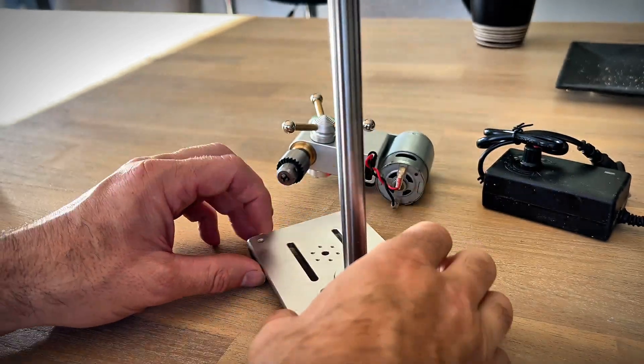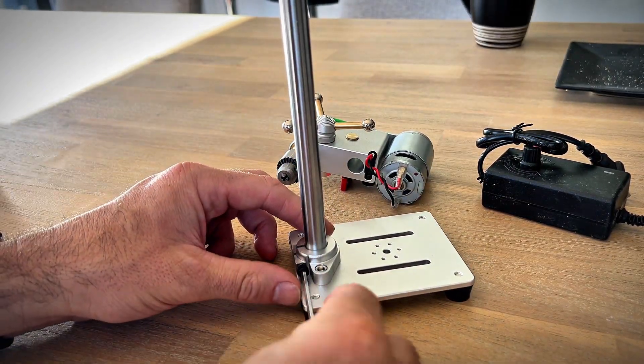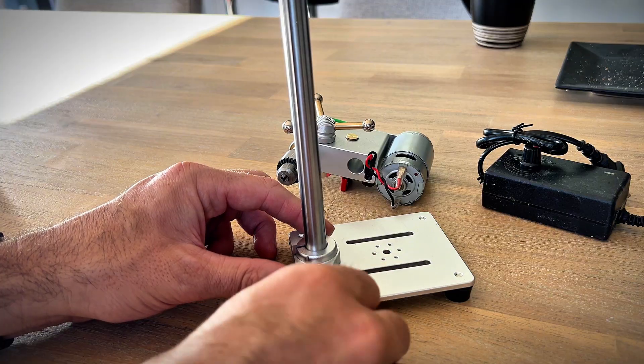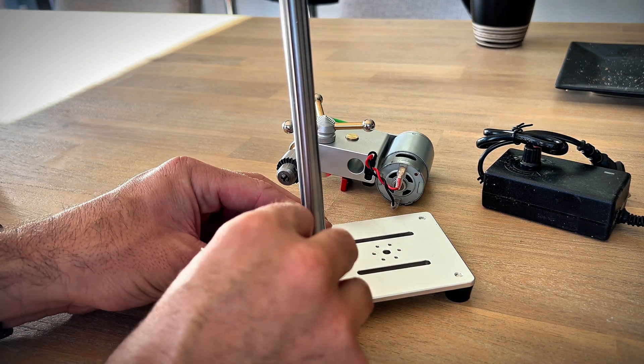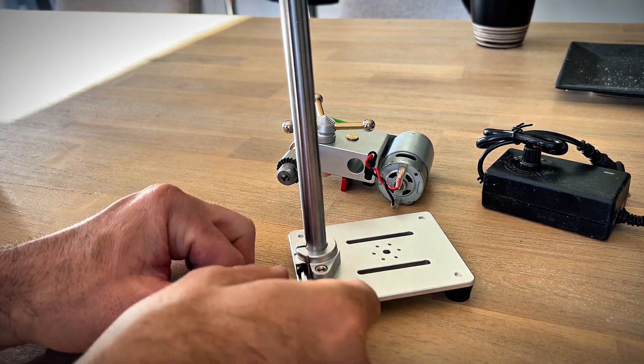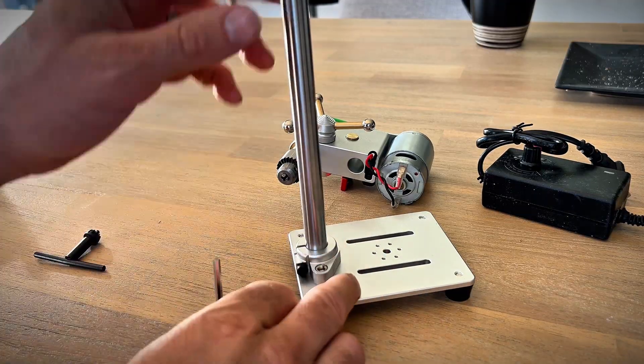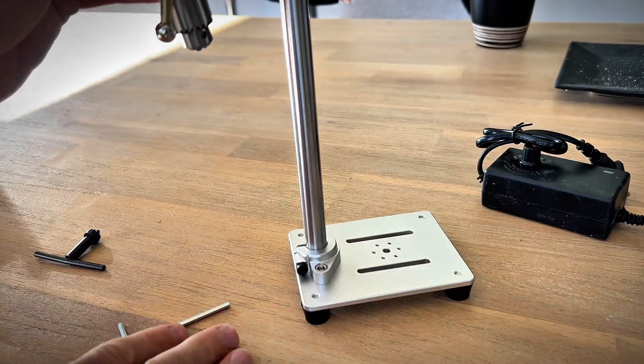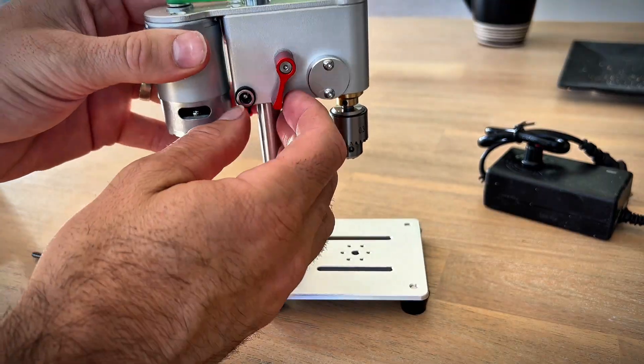To put it together we just slot that in there like that. Use the allen key to do it up tight. Grab the main drill unit, slide it over the main shaft, just like that.